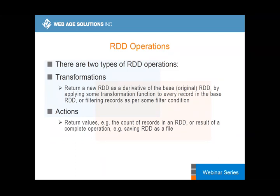Those things are not executed until an action comes along. These are lazily evaluated transformations. Everything seems to be fine — we are just moving ahead, passing on work with the belief we are able to achieve the goal when an action comes in. At that point, the whole thing collapses like a proverbial house of cards.